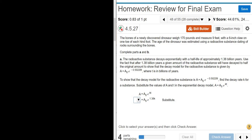With a 6-inch claw on one toe of each hind foot. Then it says that the age of the dinosaur was estimated using a radioactive substance dating rocks surrounding the bones, and it wants us to complete parts A and B.